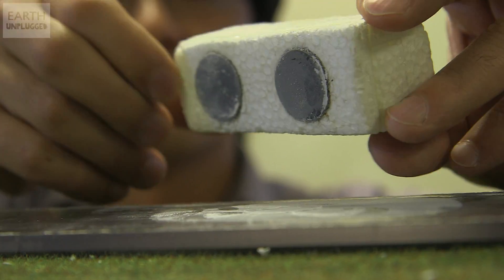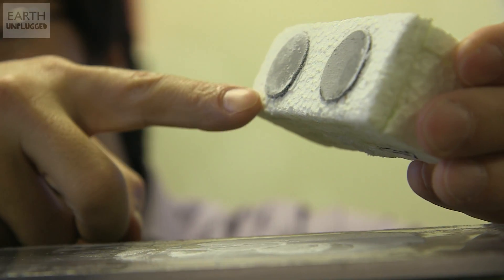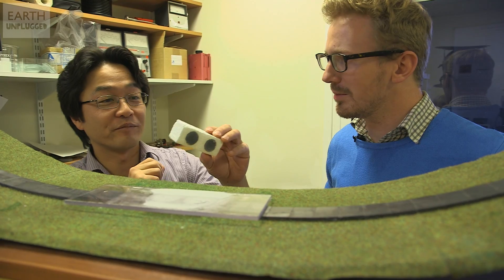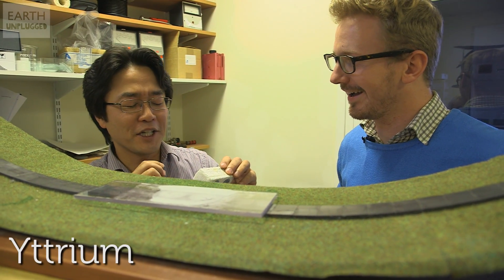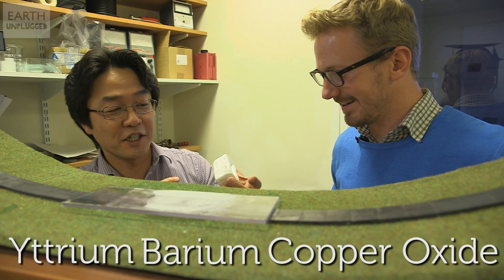This is the model train. It's a polystyrene tank and at the bottom there are two pieces of YBCO. YBCO stands for yttrium barium copper oxide, and it's a high temperature superconductor.